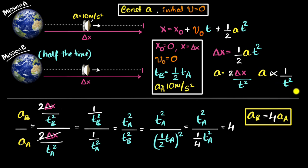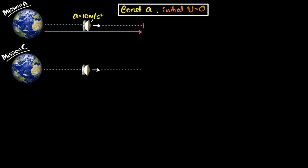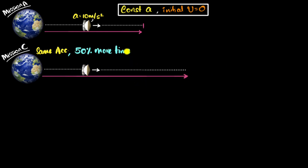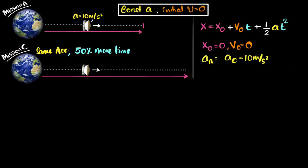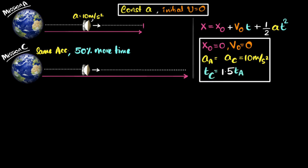Since we're having fun, let's try one more plan — mission C. Here we keep the same acceleration as before but allow the spacecraft to travel for 50% more time. So the acceleration in C equals the acceleration in A, and T_C equals 1.5 times T_A. Since it travels longer, it will go farther — but how much farther? Using the same model with x₀ = 0 and v₀ = 0, we get x = ½ a t².